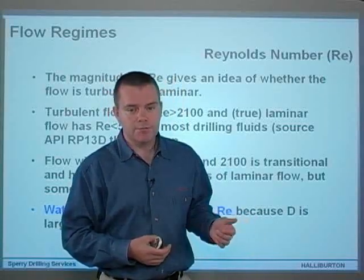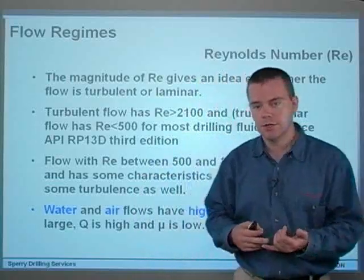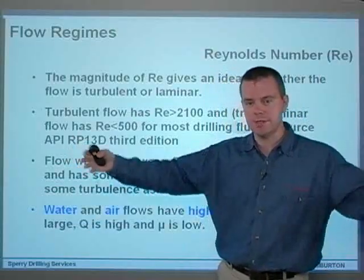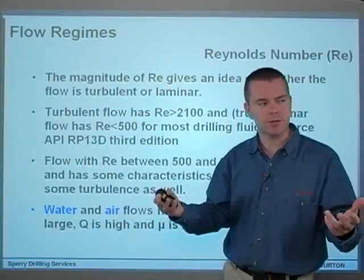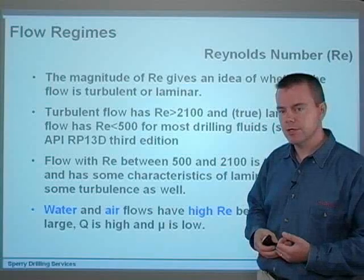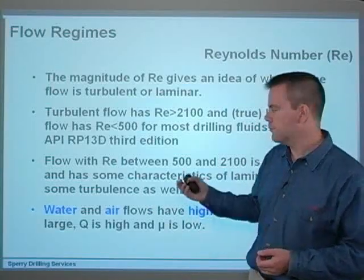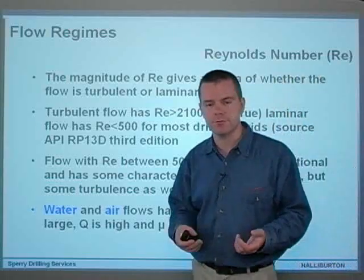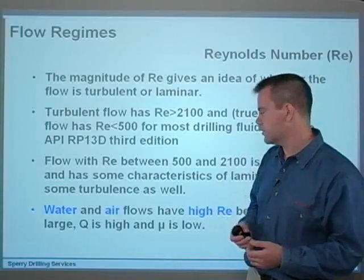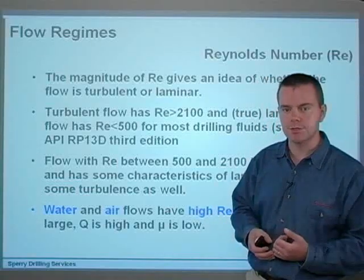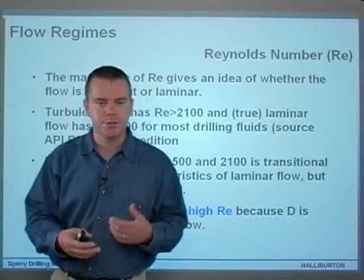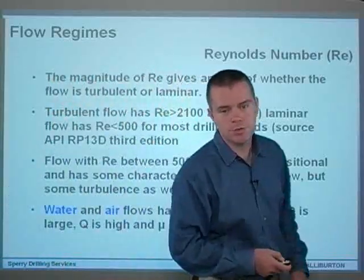Water and air flows have high Reynolds numbers because D is large — river channels are fairly deep and wide, and in a room there's a lot of space for air to move around, so D is large. Q is usually quite high as well, and the viscosity is low. The viscosity of water is only one centipoise, and the viscosity of air is way less than that — almost unnoticeable most of the time. So Reynolds numbers for water and air tend to be quite high for most flows.